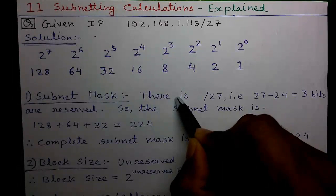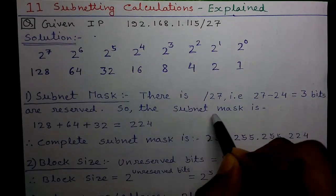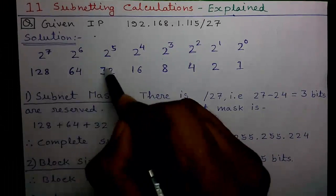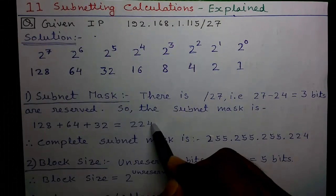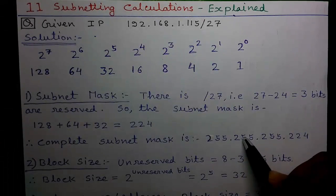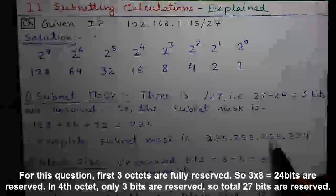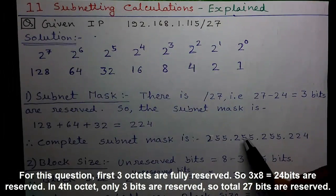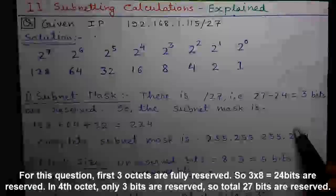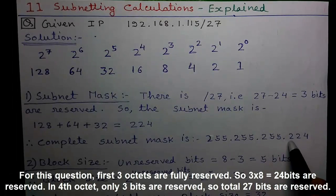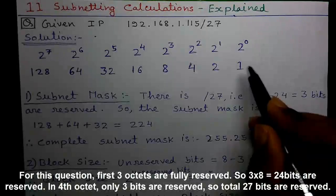First calculation: subnet mask. There is slash 27, that means 27 minus 24 equals 3 bits are reserved in the last octet. If you reserve 3 bits from the left you get 128 plus 64 plus 32 equals 224. So the complete subnet mask is 255.255.255.224. The first three 255s represent the first three octets are fully reserved — 8 times 3 equals 24 bits already reserved — and in the fourth octet, 3 more bits are reserved, giving us 24 plus 3 equals 27 reserved bits, which is the meaning of /27.